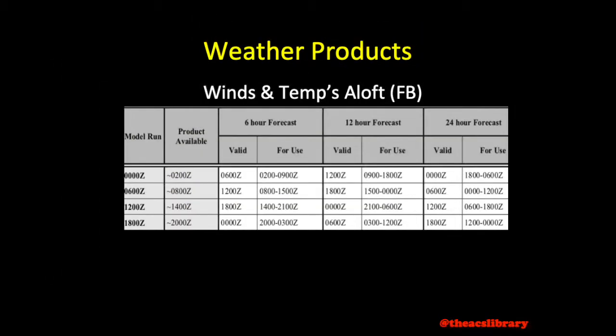Using the charts shown, we see that the winds and temperatures aloft may be 6, 12, or 24-hour forecasts, computer-generated four times daily at 0 Zulu, 0600 Zulu, 1200 Zulu, and 1800 Zulu.